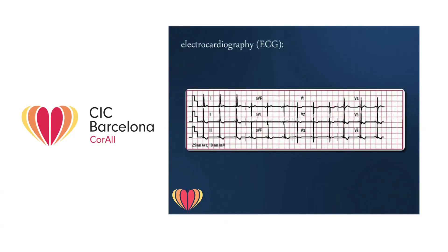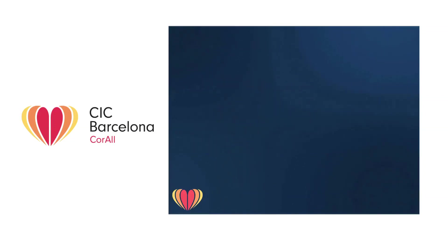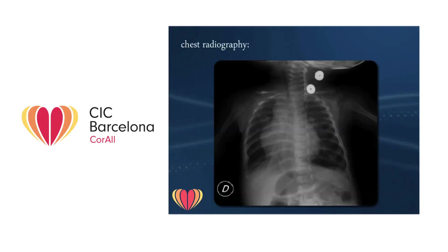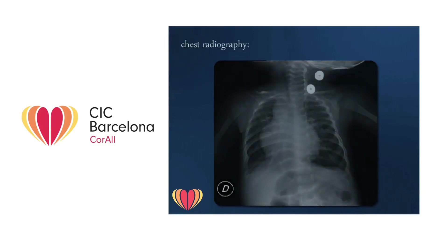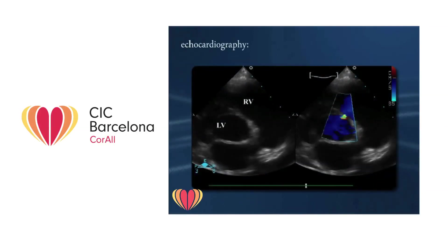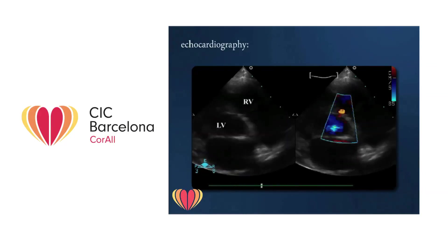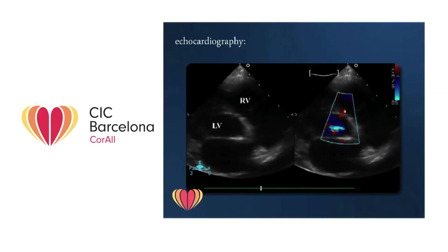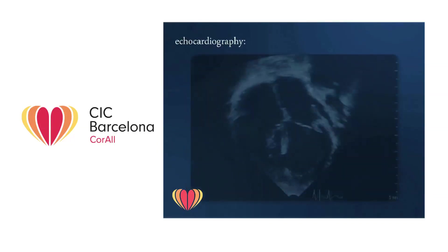Electrocardiography may reveal no evidence of small or medium-sized defects, but it might show signs of biventricular hypertrophy in case of large defects. Chest radiography reveals no evidence of small or medium-sized defects, but it shows cardiomegaly — the abnormal enlargement of the heart — and increased pulmonary vascular markings in case of large defects. Echocardiography usually allows a comprehensive diagnosis of all types of ventricular septal defect and enables the evaluation of pulmonary artery pressure. Indications for surgical correction are commonly based on clinical symptoms and echocardiographic results.